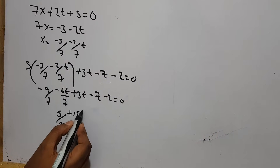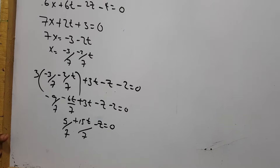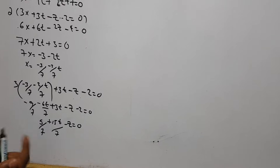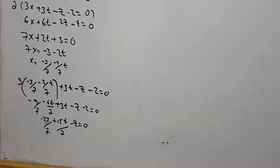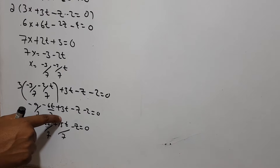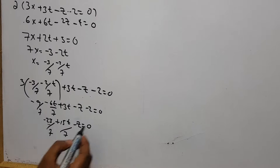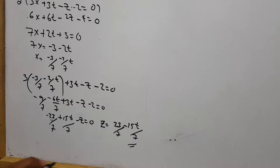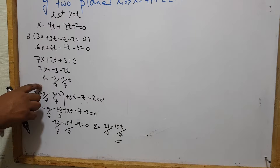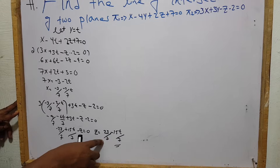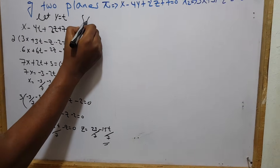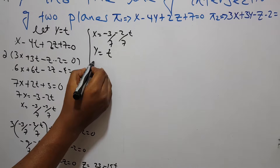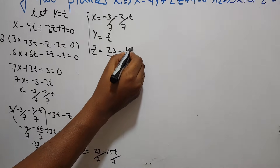So 21 minus 6 plus 15t over 7 minus z equals 0, giving z equals 15 over 7 minus 23 over 7. Z equals 23 over 7 minus 15t over 7. So the final parametric equations are: x equals minus 3 over 7 minus 2 over 7 t, y equals t, z equals 23 over 7 minus 15t over 7.